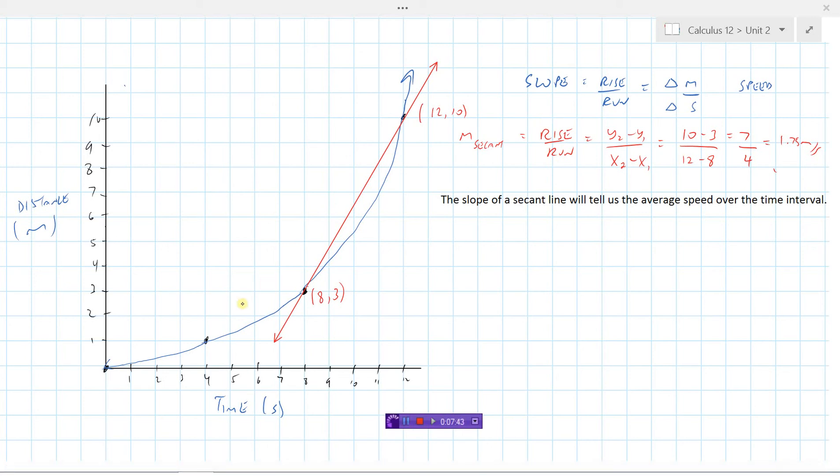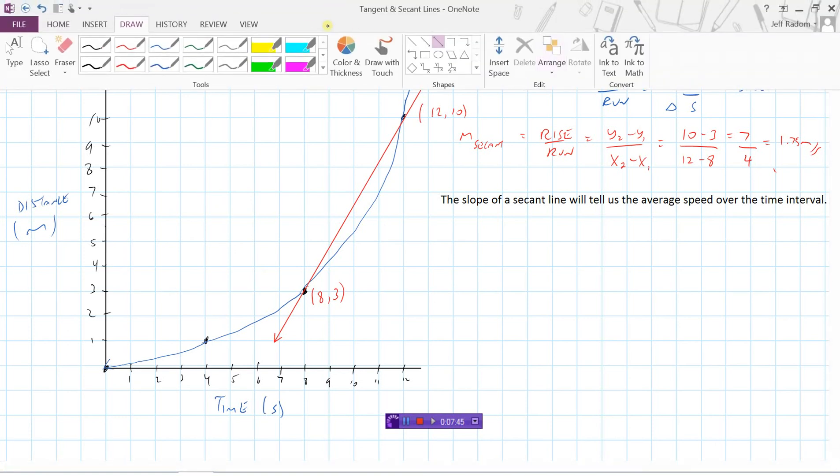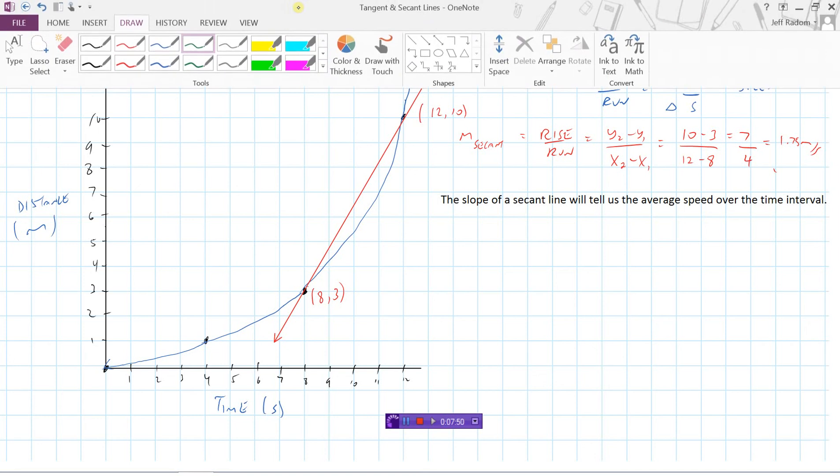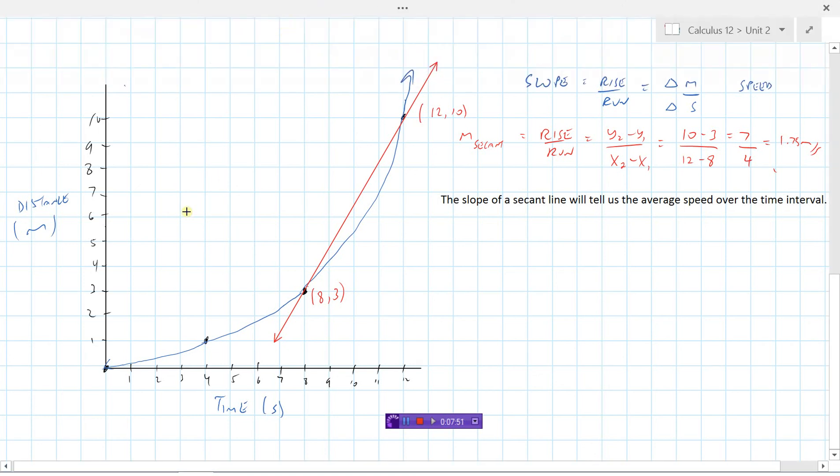So now what if we did a tangent line? Let's do a tangent line right here at that point 8,3. So there, my green line just nicks the curve right there.